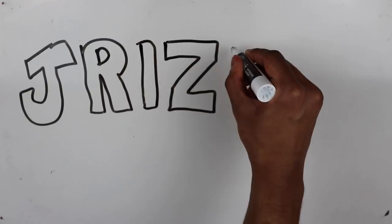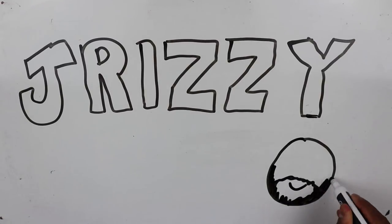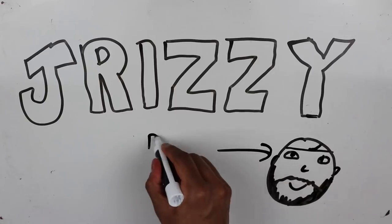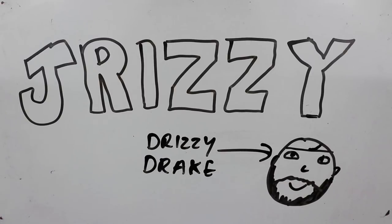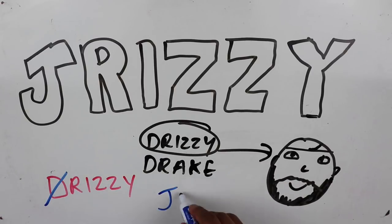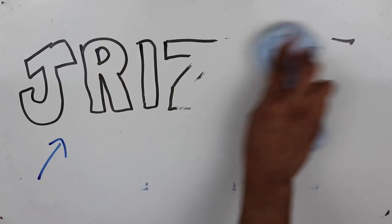The way I got the name Drizzy is actually kind of interesting. Back in the day I used to like Drake, and his name was actually Drizzy Drake. So I got the Drizzy, replaced the D with the J, and made Drizzy Jeremy.